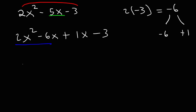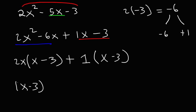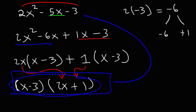In the first two terms, take out the GCF of 2x: 2x squared divided by 2x is x, and negative 6x divided by 2x is minus 3. In the last two terms, the GCF is 1: we take out 1, leaving x minus 3 plus 1. Both groups share the factor x minus 3, so factor it out. Taking x minus 3 from each term leaves 2x and plus 1. The final answer is x minus 3 times 2x plus 1. You can FOIL to verify.